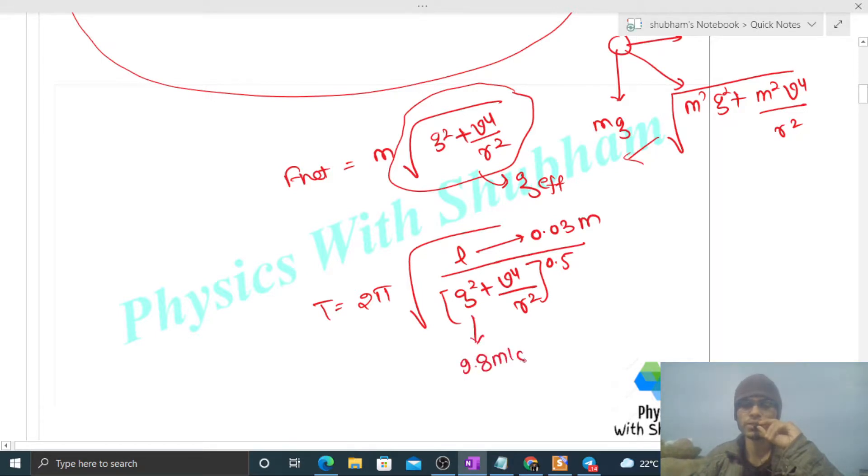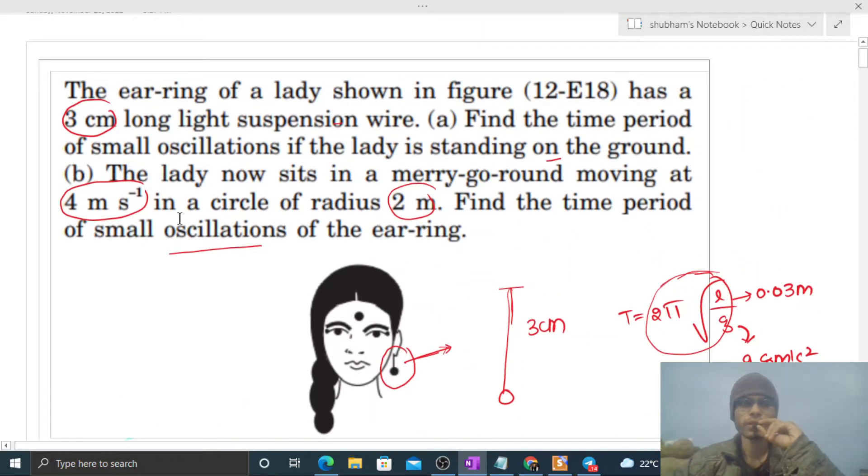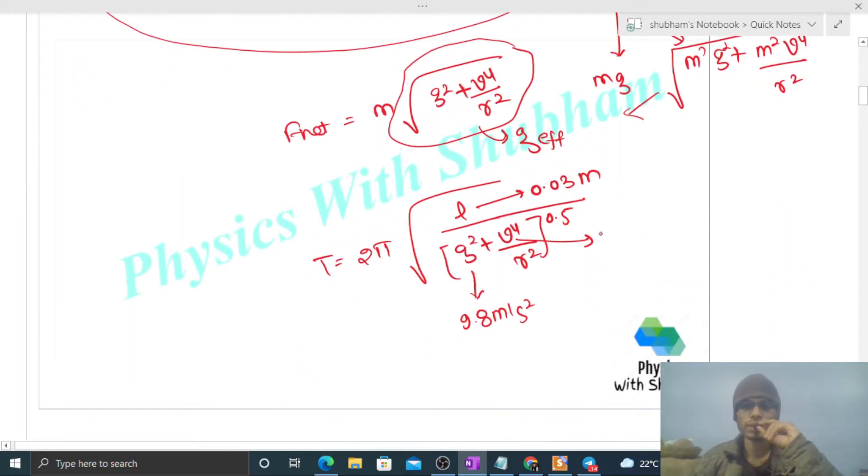Velocity or speed is given, I think 4 meter per second, and radius is 2 meter. So speed is 4 meter per second and radius is 2 meter. So now we can find out the numerical value for this time period also.